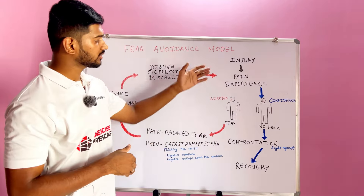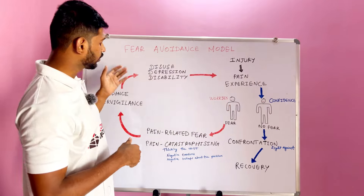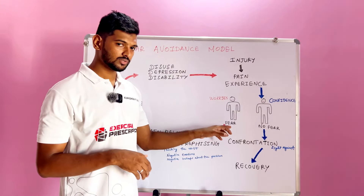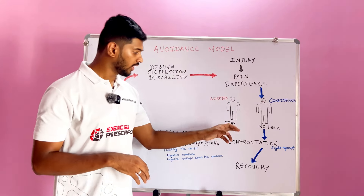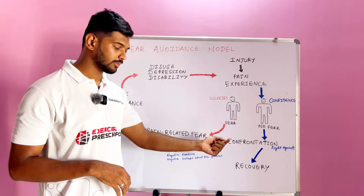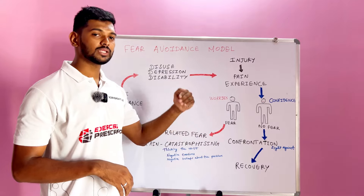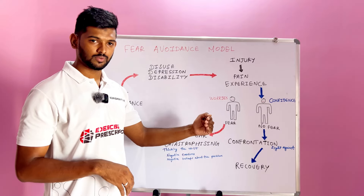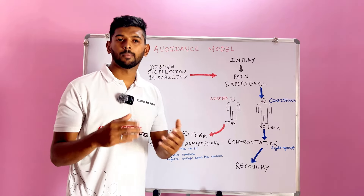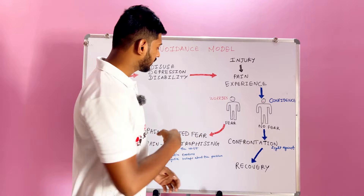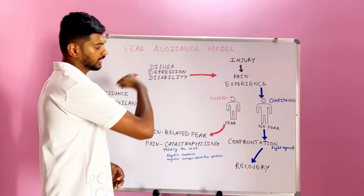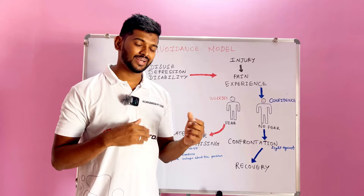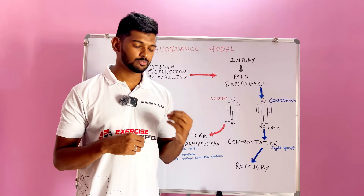Most of us are not treating the person's problem accurately — we're treating the pain alone. That is where the person ends up in a loophole. For example, you treat the pain, the person has no pain and bends forward again, faces pain again, their fear increases, they feel they have not improved completely, and they end up in this cycle again and again, facing chronic pain.